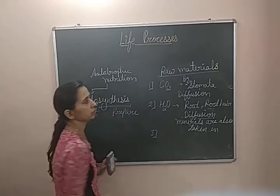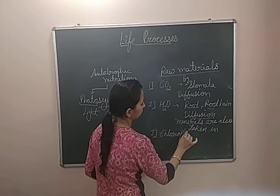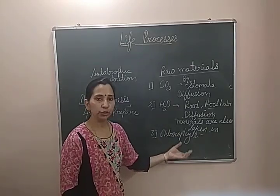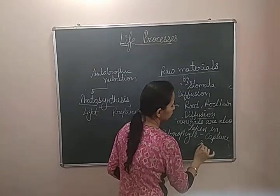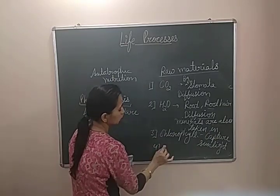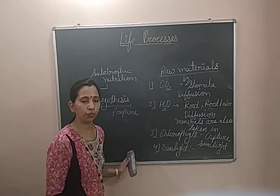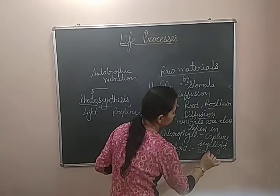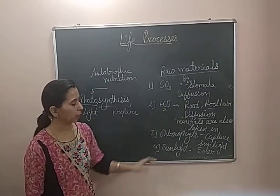The third raw material required for photosynthesis is chlorophyll. Chlorophyll is the green color pigment present in the green leaves, which helps in capturing sunlight required for photosynthesis. The fourth raw material is sunlight. Sunlight is required for the formation of bonds between carbon dioxide and water. Sunlight comes directly from the sun in the form of solar energy, and it is required for binding or joining carbon dioxide with water.